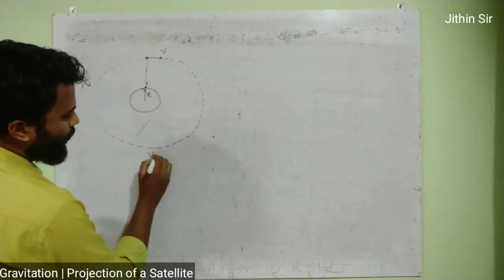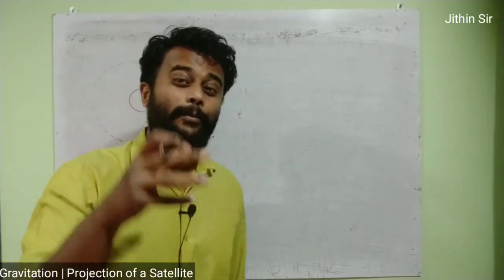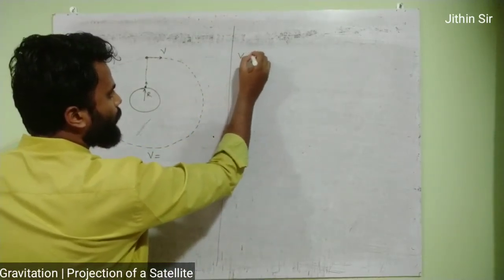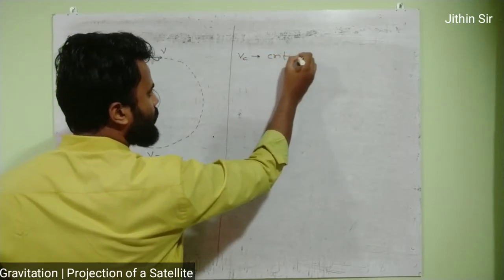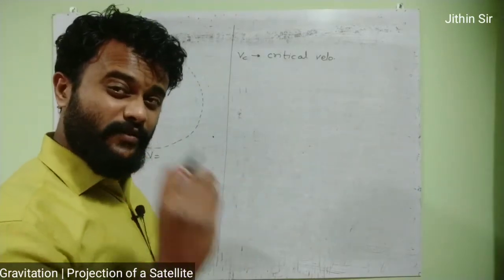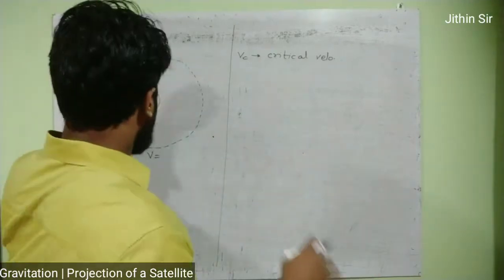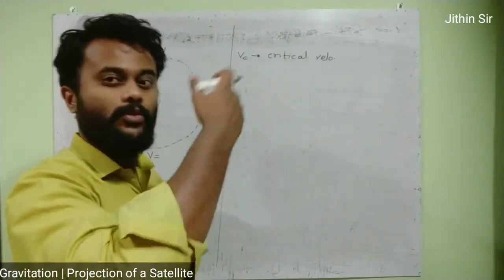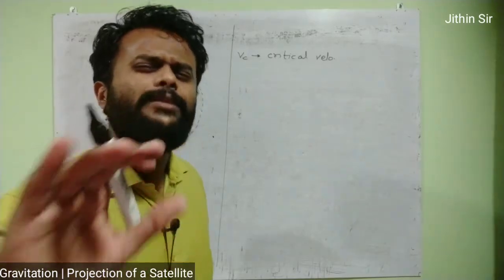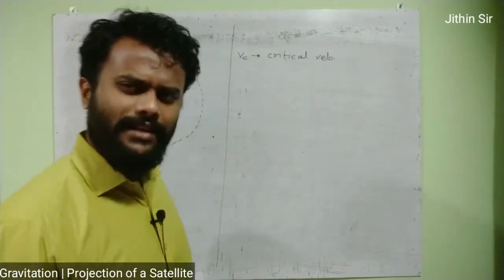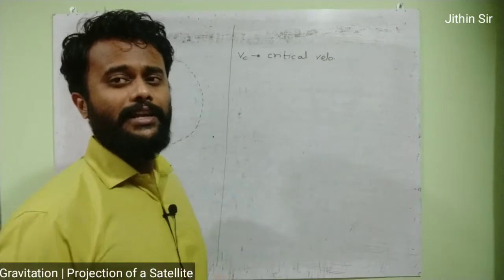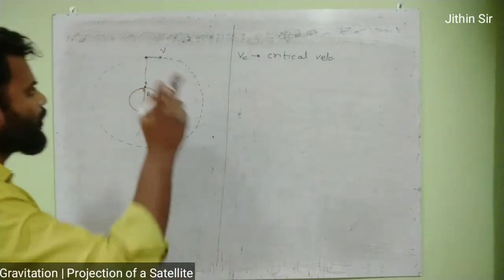This circular motion happens when the velocity we sent is equal to the apt velocity. This apt velocity has a name — it is called critical velocity. Critical velocity is that value of velocity with which, if we project the satellite forward, it performs exactly circular motion and keeps revolving lifelong. In English: critical velocity is that value due to which, if we project the satellite, it can perform proper circular motion.